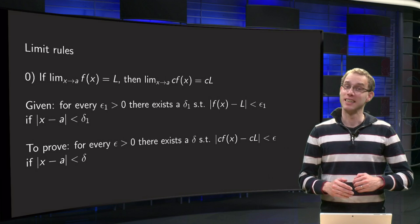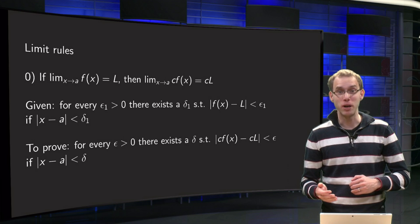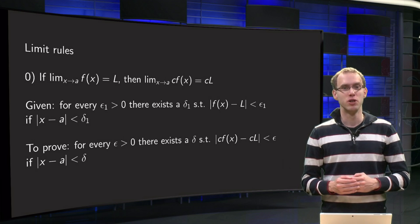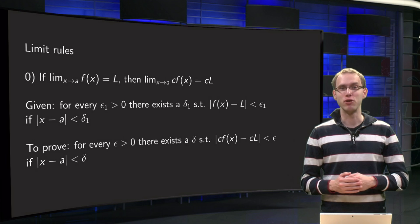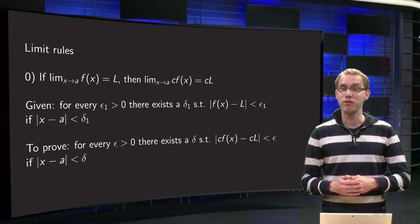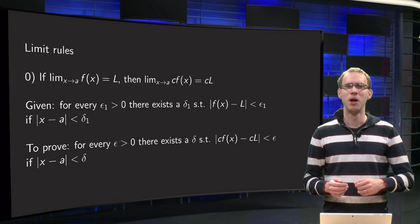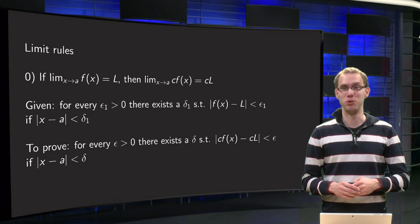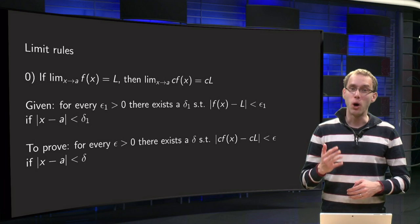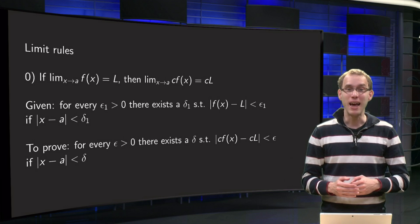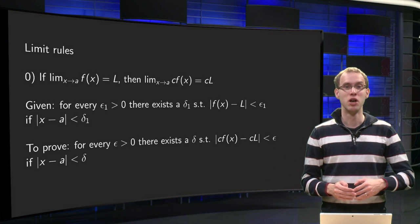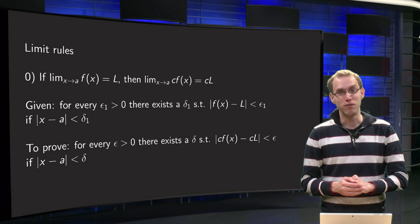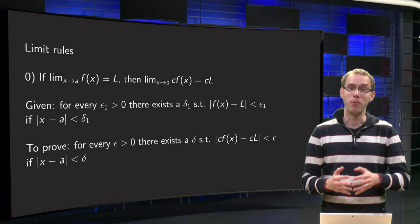Limit rules, like the limit of a sum equals the sum of the limits, seem very plausible. So why bother about the formal proofs if you are not a mathematician? You see that those proofs are in the textbooks you are using, also if those textbooks are aimed at an engineering audience. So apparently they are interesting for non-mathematicians as well. But why is this?